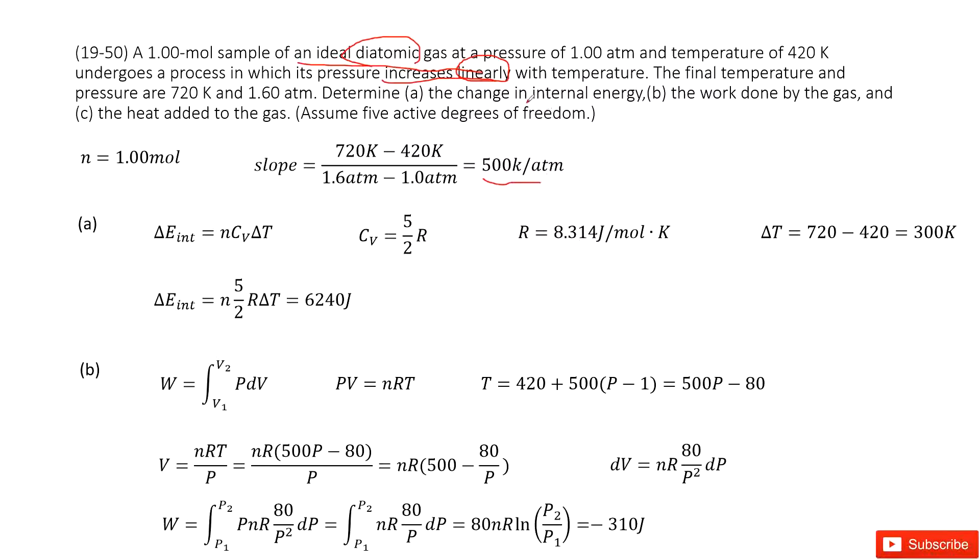Now first part we need to determine the change in internal energy. So very straightforward. We just write the function for change in internal energy: ΔE_int equals nC_vΔT. Delta T is so easy, right?